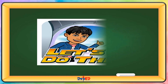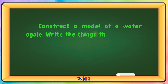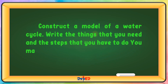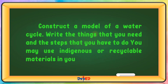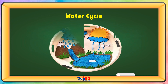Activity: Construct a model of a water cycle. Write the things you need and the steps you have to do. You may use reusable or recyclable materials in your project. Here is an example of a water cycle project.